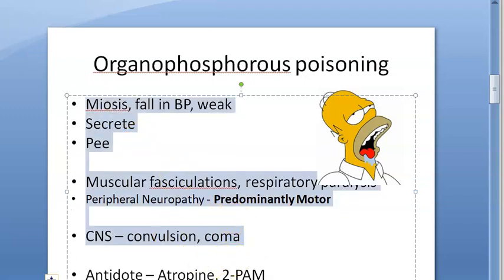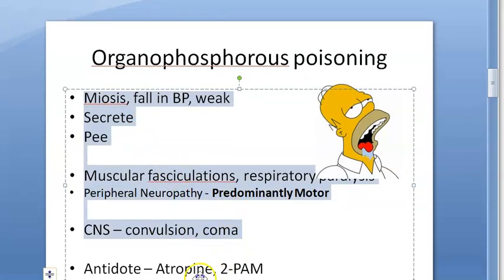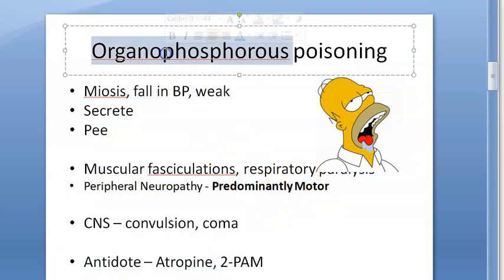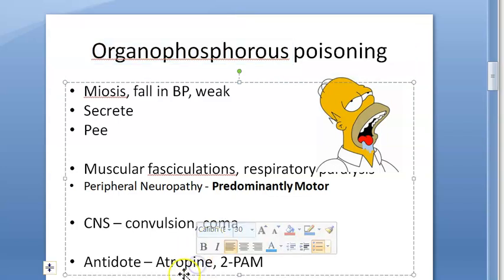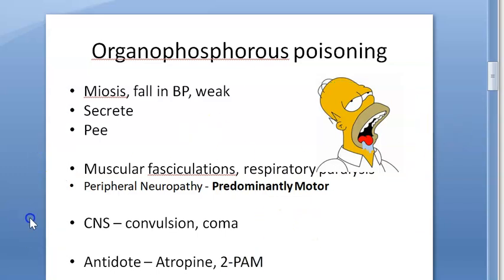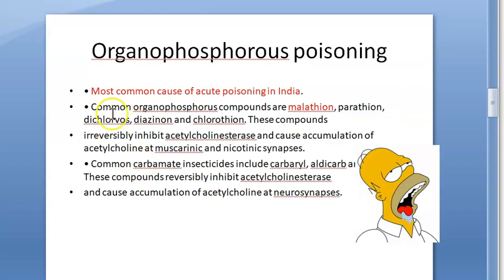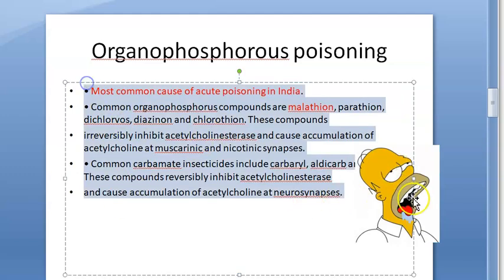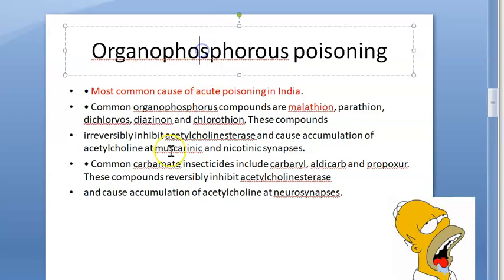The antidote is atropine, and pralidoxime can also be given in OP poisoning. Atropine is given for both OP poisoning and carbamate poisoning, but pralidoxime is only for OP poisoning. Atropine can definitely be given in both cases.